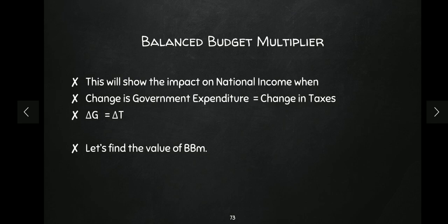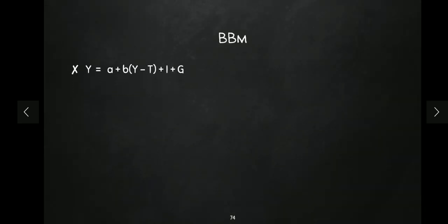So I want to find out the impact on national income when the government has a balanced budget. Let's find out the value of the balanced budget multiplier. Since here we are introducing both taxes and government expenditure, the equation is: Y = a + b(Y - T) + I + G. Those who have not seen the previous video, please go and watch that first — the tax multiplier has been explained there in detail. The link is in the description box.